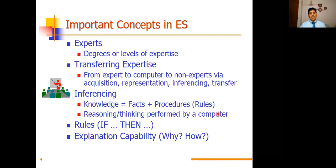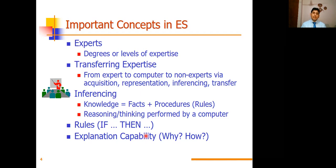Rules are developed on the basis of if-then: if this occurs, then this will be the solution. If someone is suffering from a headache, then this will be the solution. Rules are developed based on if-then conditions. The system also provides an explanation of the ability — why and how. Your system has to define each fact and rule, why this happens and how it may be solved. There is an explanation for each rule in the expert system.